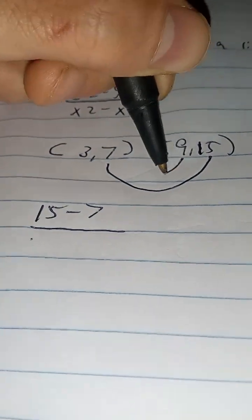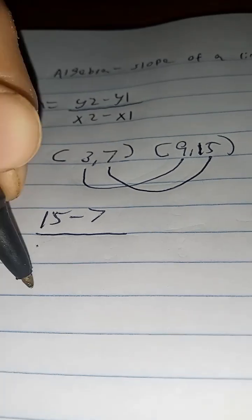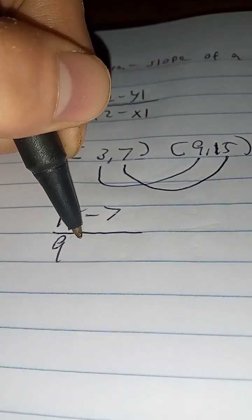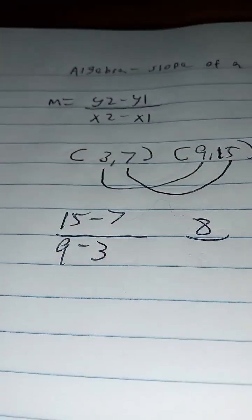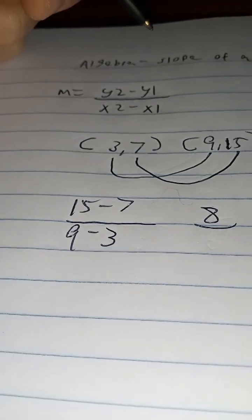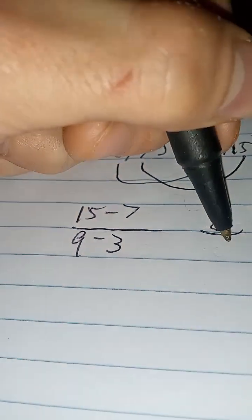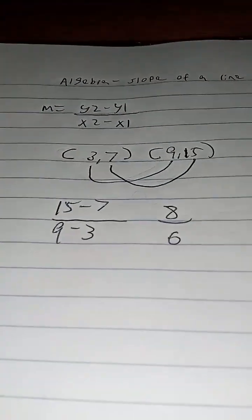And then we're going to start off with the 9 and the 3. So, 15 minus 7 is 8. We're going to write that out. And then 9 minus 3 is 6. But we're not quite done. We have one more step.